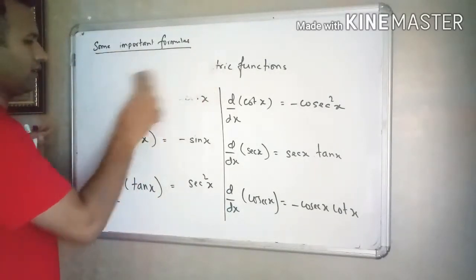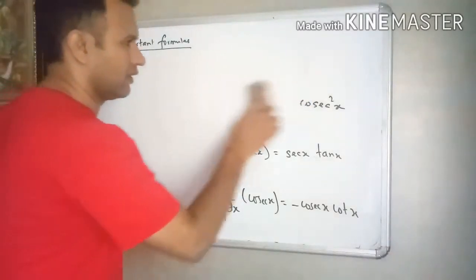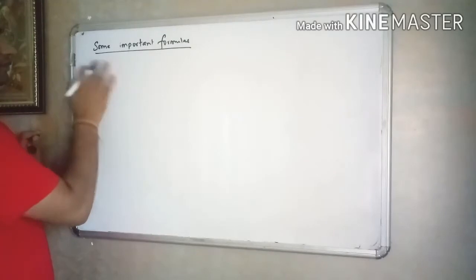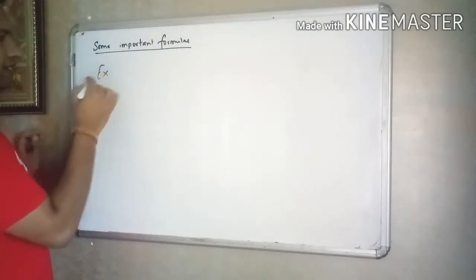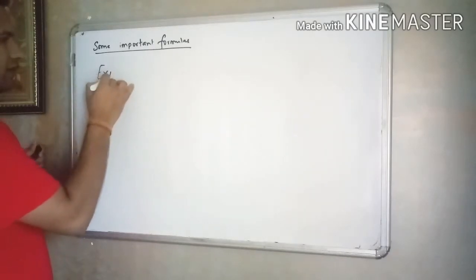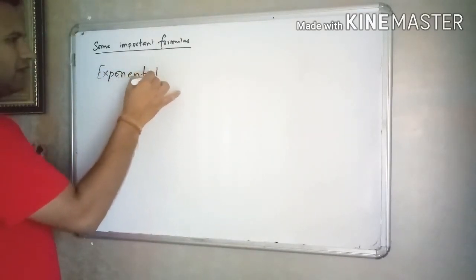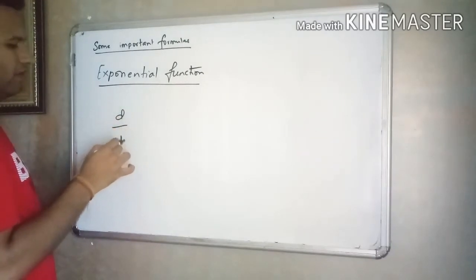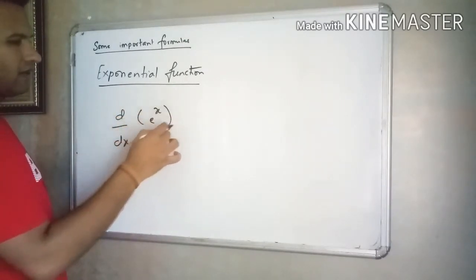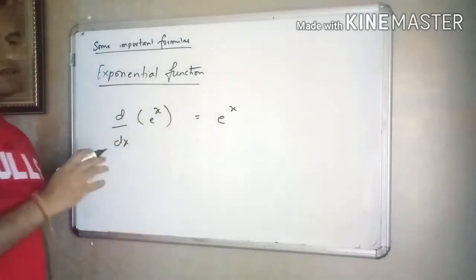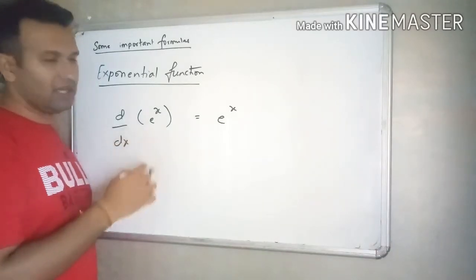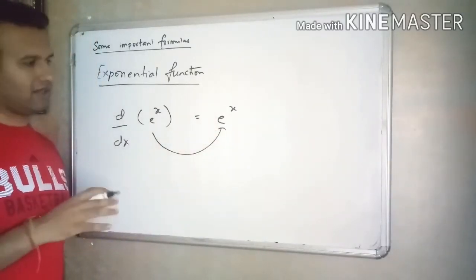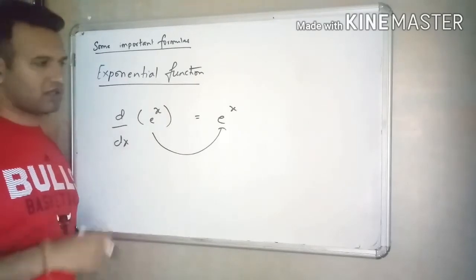There are two more important derivatives you have to remember. Let's talk about the exponential function. The derivative of e raised to x is e raised to x. This is the only function in which even after taking the derivative the function does not change — it remains as it is.